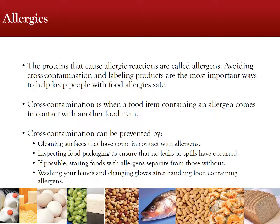Food safety is especially important when dealing with people with food allergies. The proteins that cause allergic reactions are called allergens. The most common food allergies include dairy, peanuts, fish, and wheat. Avoiding cross-contamination and labeling products are the most important ways to keep people with food allergies safe. Cross-contamination is when a food item containing an allergen comes in contact with another food item. It can be prevented by cleaning surfaces that have come in contact with allergens, inspecting food packaging to ensure no leaks or spills have occurred, storing foods with allergens separate from those without, and changing gloves after handling food containing allergens.